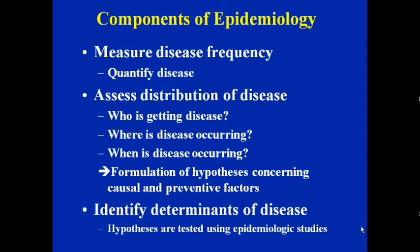The second component is to assess the distribution of disease — that is, to know who is getting the disease, where the disease is occurring, and when it is occurring. 'Who' refers to subgroups of population, 'where' refers to place, and 'when' refers to whether it follows a seasonal, cyclical, or long-term trend. From this distribution, we formulate a hypothesis.